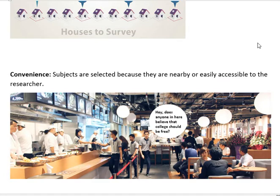Another method is convenience sampling, where subjects are selected because they are nearby or easily accessible to the researcher. In this particular picture, people are sitting in a restaurant and somebody says, 'Hey, does anyone in here believe that college should be free?' That would be a convenience study because they're just literally turning to people around them and asking them to answer the question.